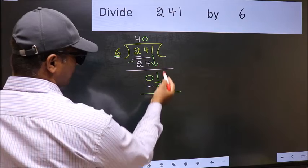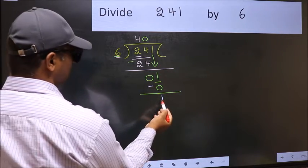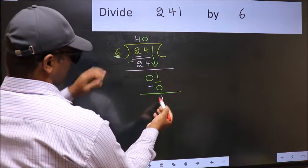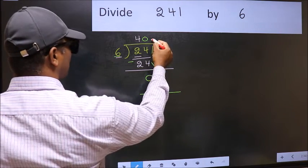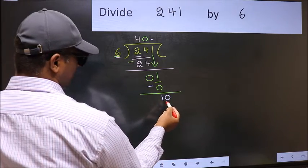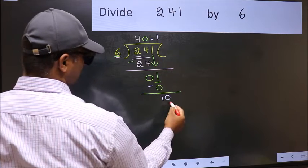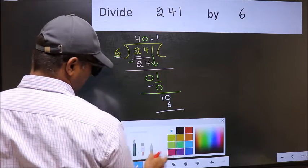Over here we did not bring any number down, and 1 is smaller than 6, so now you can put dot and take 0. So 10. A number close to 10 in 6 table is 6 times 1 is 6. Now you should subtract 10 minus 6 is 4 and continue the division.